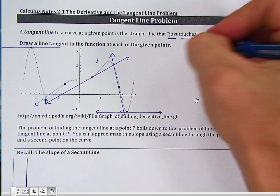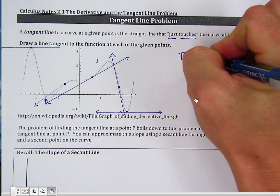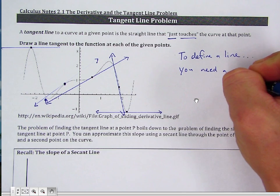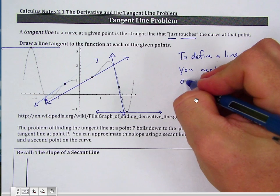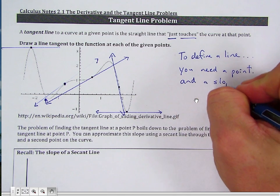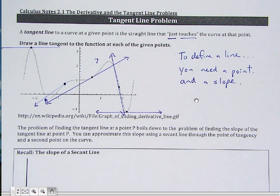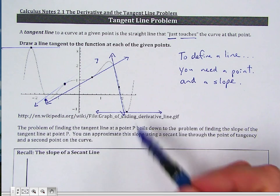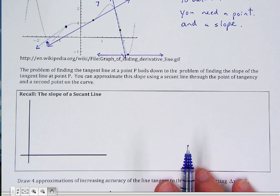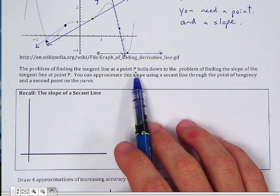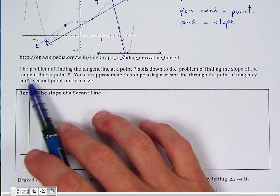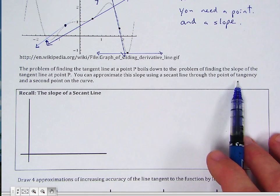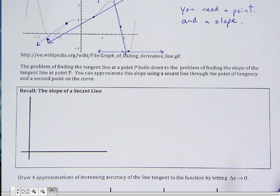To define a line, you need a point — which we have here — and a slope. If you have a point and a slope, then you can define what the line is. The problem of finding the tangent line at a point P boils down to finding the slope of the tangent line at point P. You can approximate the slope using a secant line through the point of tangency and a second point on the curve.